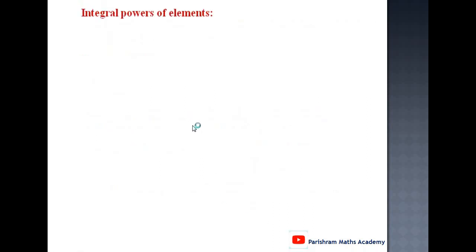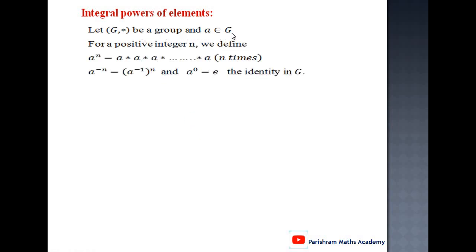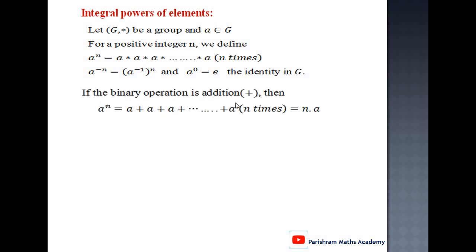Next, integral power of elements. Let (G, *) be a group and a belongs to G. For a positive integer n, we define a raised to n equal to a * a * a ... (n times). Also, a raised to -n equals (a inverse) raised to n, and a raised to 0 equals the identity element in the group G. If the binary operation is addition, then a raised to n is the same as a + a + ... (n times), that is n times a.